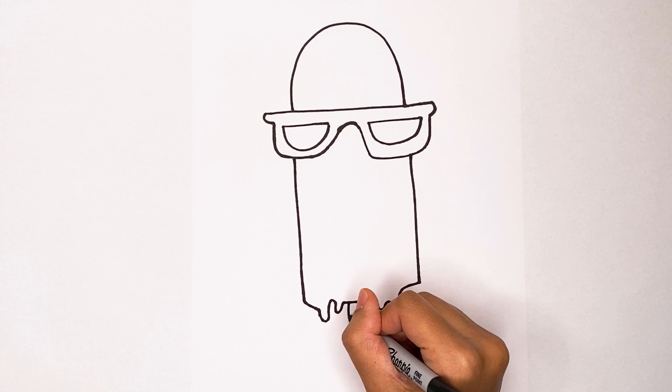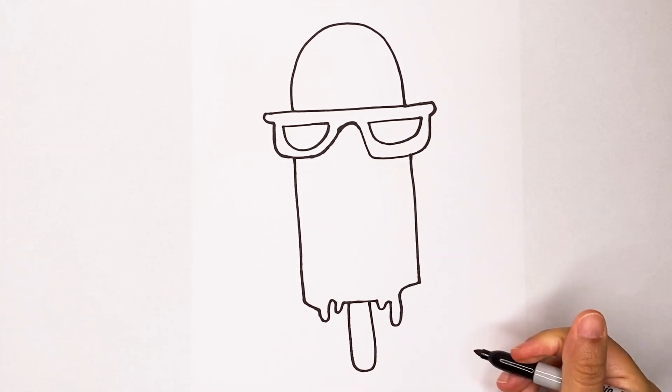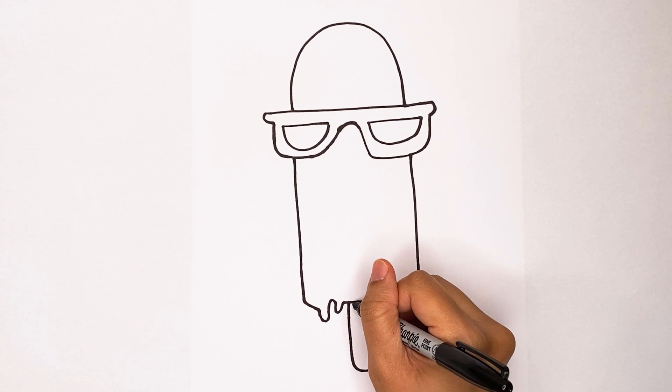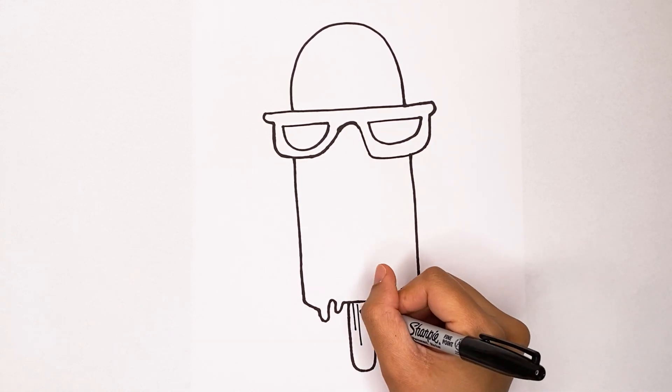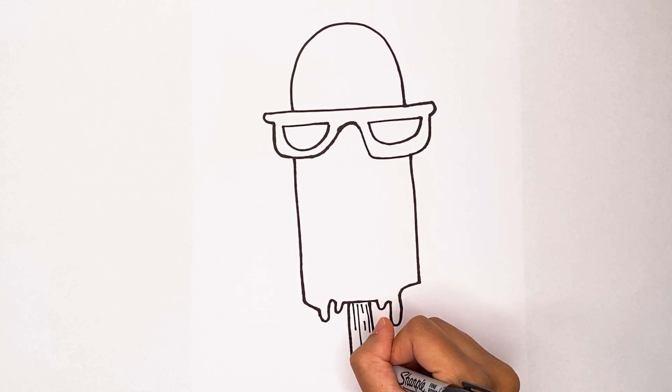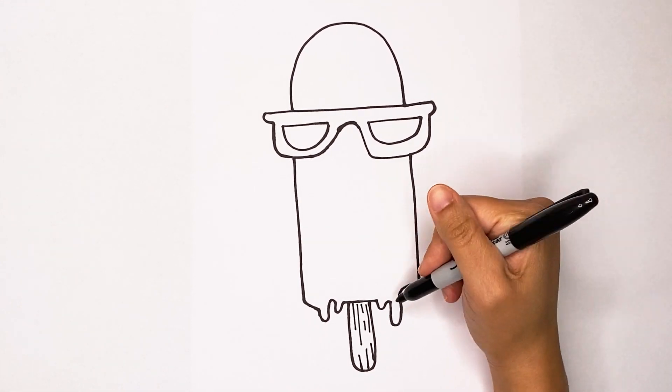Now I'm going to draw the bottom of my popsicle, the little stick at the bottom. It's just a big curve and up. I'm going to make my popsicle stick a little bit more defined by making these little marks. They look like the little marks that wooden popsicle sticks have, so I just drew little lines everywhere.